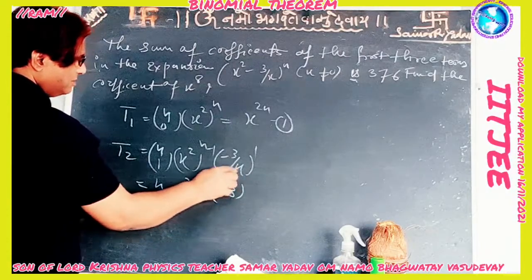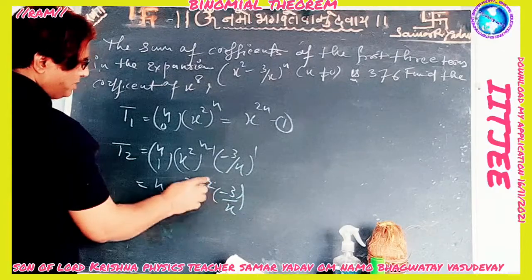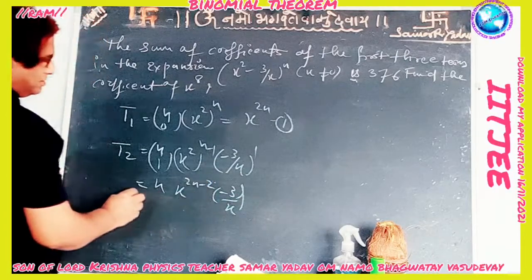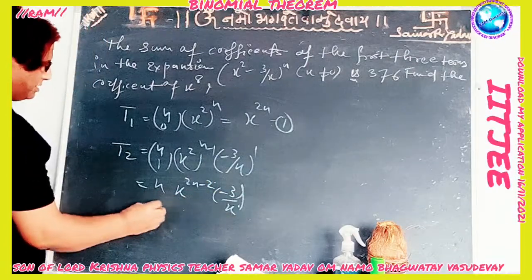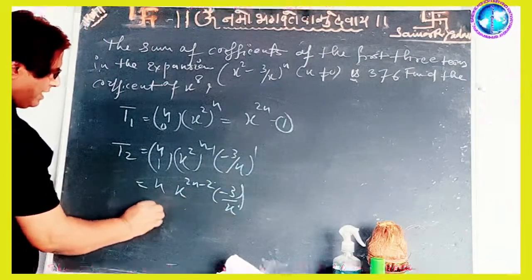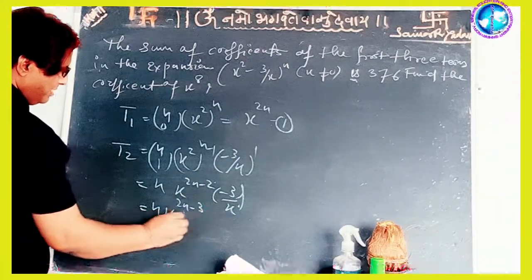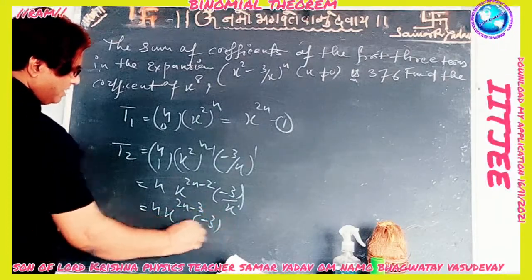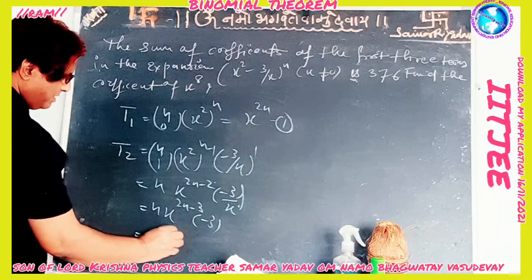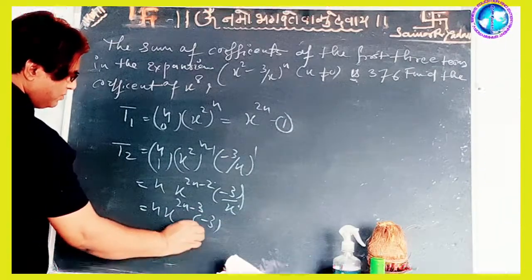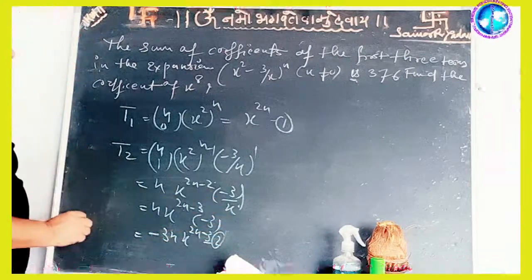Simplifying T2, we get -3n · x^(n-3) ... (2).